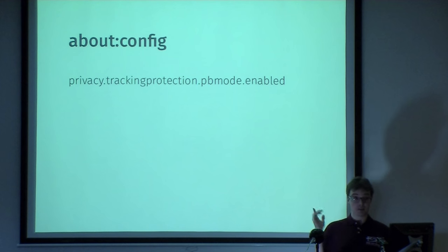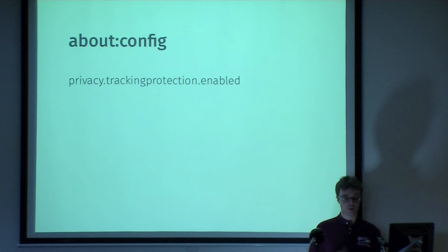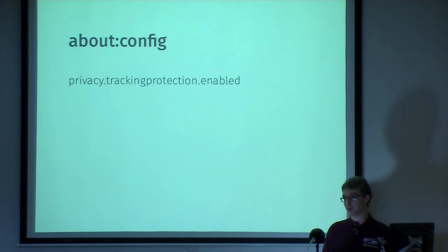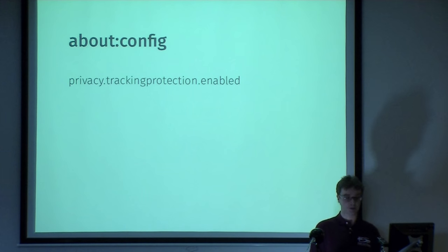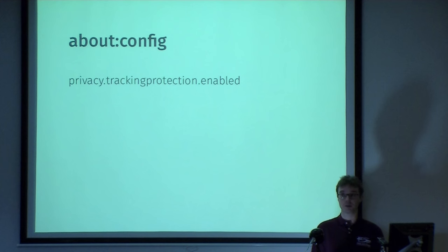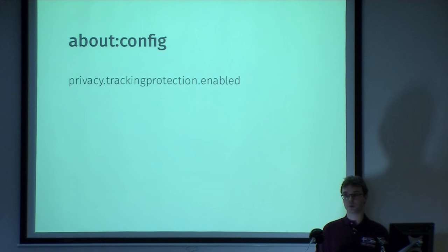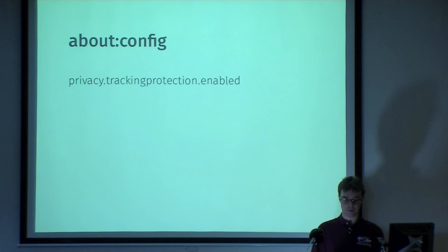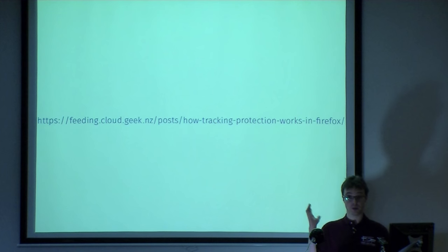This is a setting that controls tracking protection in private browsing mode. This is probably the one you want if you want it on all the time, not just in private browsing — it's something we're still working on exposing to users, but it works today if you flip it on. The browser does display where it's blocking — there's UI that says elements within the blocked page and that kind of stuff. I wrote a blog post about how it works as well.